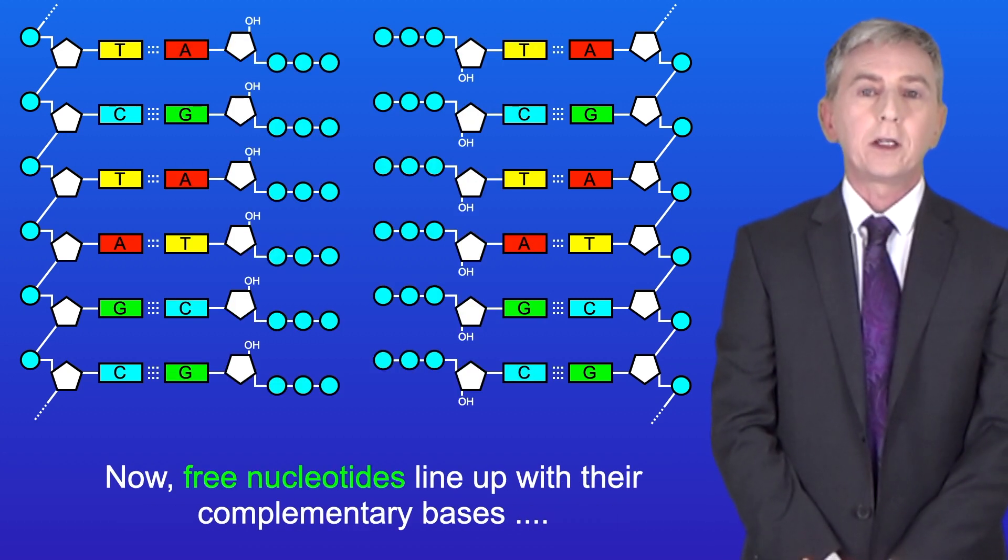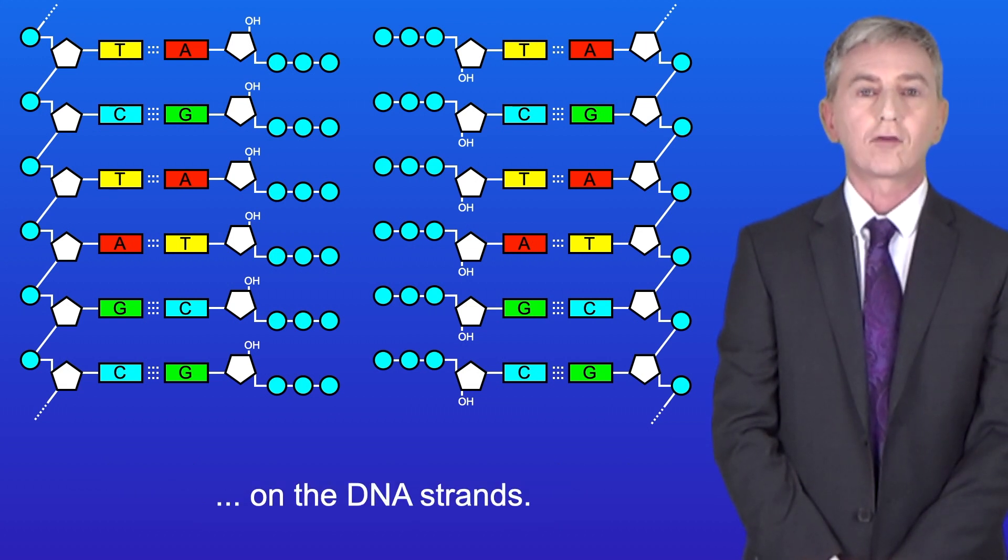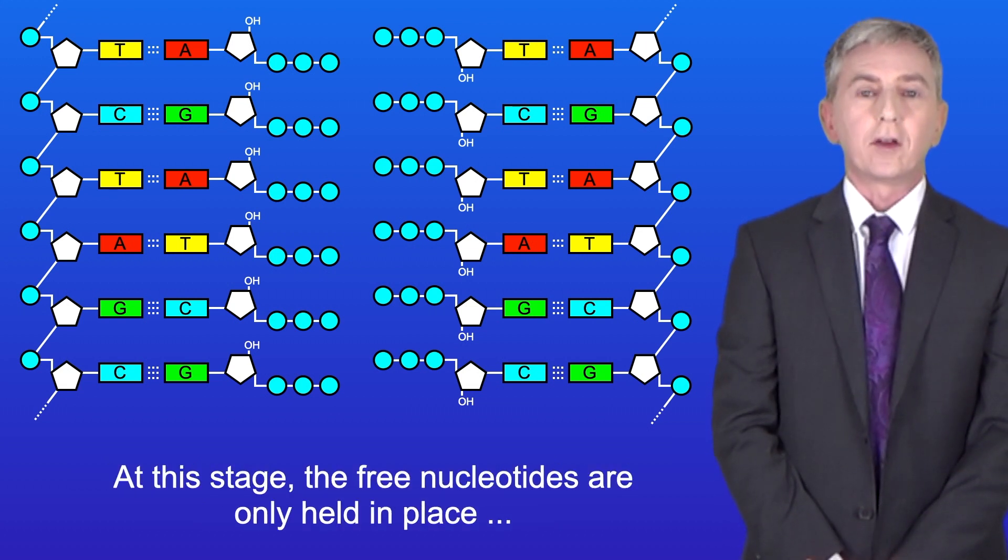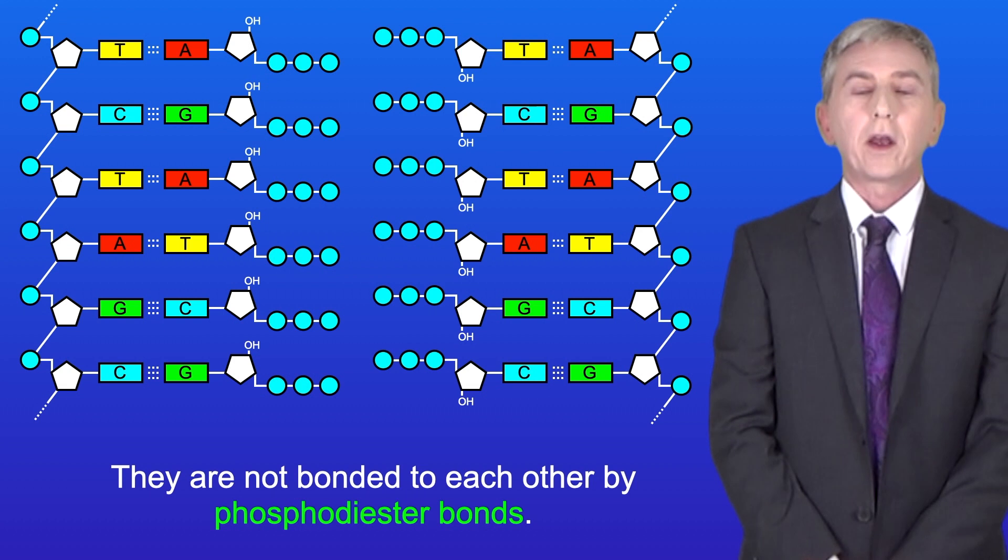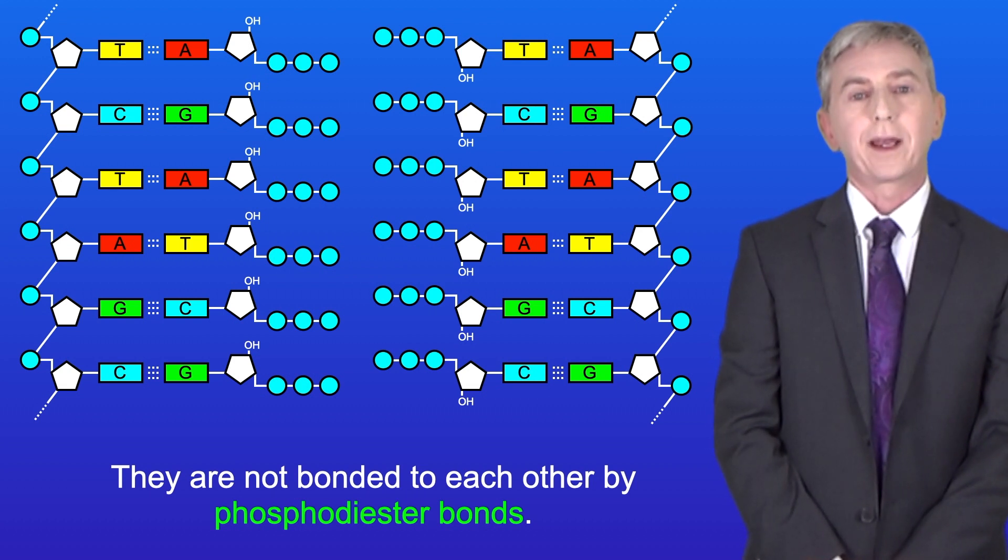Now free nucleotides line up with the complementary bases on the DNA strands. At this stage the free nucleotides are only held in place by hydrogen bonds between the complementary bases. They are not bonded to each other by phosphodiester bonds.